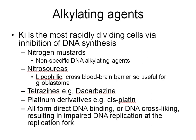Alkylating agents kill the most rapidly dividing cells by disrupting DNA synthesis. These are highly reactive molecules that cross-react with DNA — they bind to DNA and either mutate it or cross-link individual bases to other bases. Within this group we have nitrogen mustards, which are fairly non-specific alkylating agents, nitrosoureas which are particularly useful for crossing the blood-brain barrier, and the platinum derivatives, with cisplatin being the main one. All of these form direct DNA binding or cross-linking, resulting in impaired DNA replication at the replication fork.